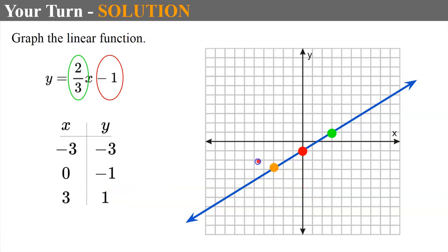And we can graph those. Negative 3, negative 3, 0, negative 1, and 3, 1. Noticing that some of them are the same points you get when you graph it in slope-intercept form. Reminding you, these are only 3 of the possible solutions to this function. There are an infinite amount. The domain is all real numbers, and the range is all real numbers.